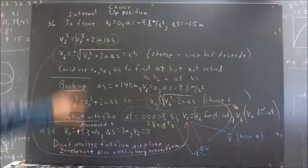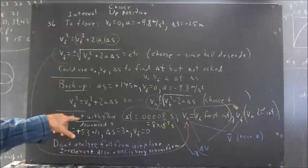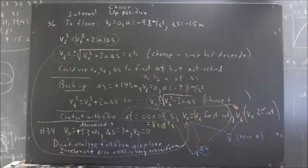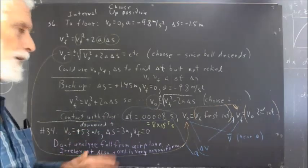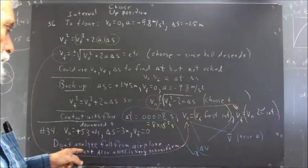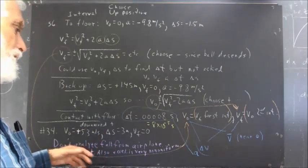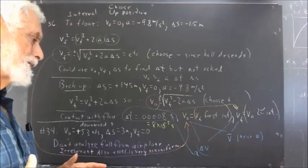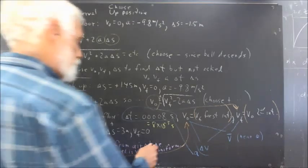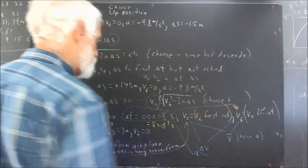You can't analyze the fall anyway because the acceleration is very much non-uniform. As air resistance builds, which it will over the first ten or so seconds, to the point where the falling airman is moving at constant velocity now because the air resistance is exerting upward force that's equal to the downward force of gravity, so it doesn't speed up anymore.